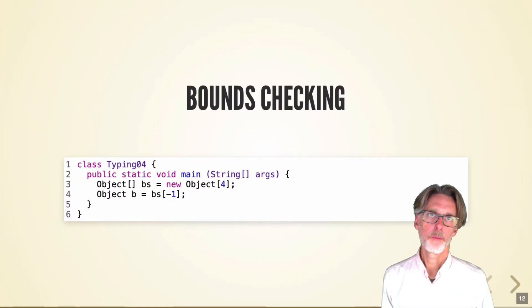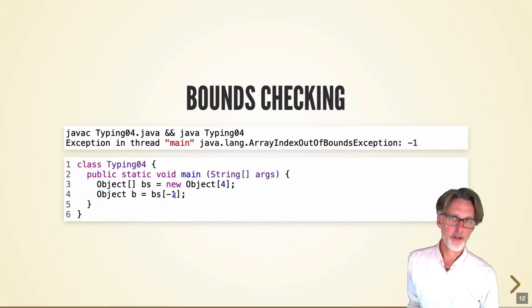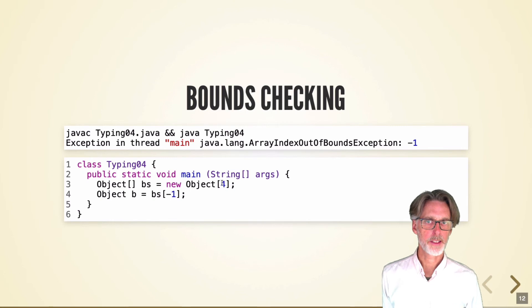For example, bounds checking in Java causes this program to throw an exception. Because negative 1 is not a valid index. We would also get an exception if we were to try to access element 4. Because this is also not a valid index. The valid indices here will be 0, 1, 2, 3.